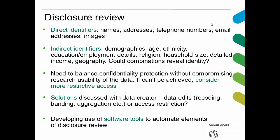We will also look at indirect identifiers, and these tend to be demographics and key variables. For example, age, ethnicity, education and employment, religion, household size, detailed income or geography. Indirect identifiers may not directly reveal the identity of people in the data file, but what we need to check is whether combinations could reveal their identity. For example, are there cases unique within the sample? We need to balance confidentiality protection of respondents without removing or anonymizing so much in the data that we restrict its research usability.